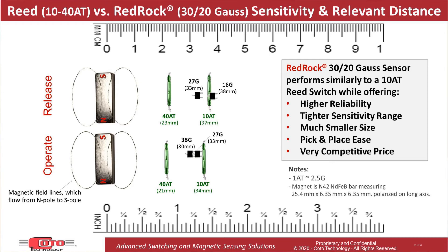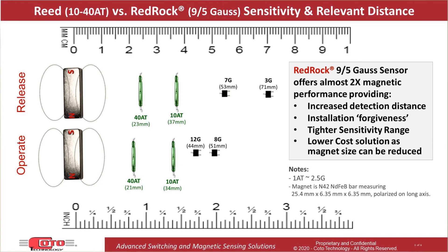With your customer becoming more comfortable with RedRock and the TMR technology, you now move to slide three. Illustrated in slide three is the increased magnetic power or distance achieved when moving to a 9.5 Gauss RedRock sensor. When compared against the same 10 AT reed switch, which is one of the most sensitive available, the release and operate distances are almost doubled.